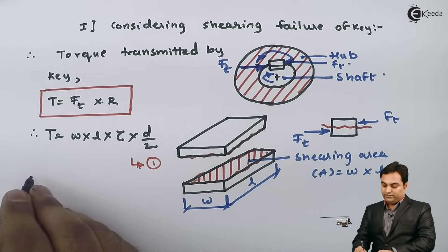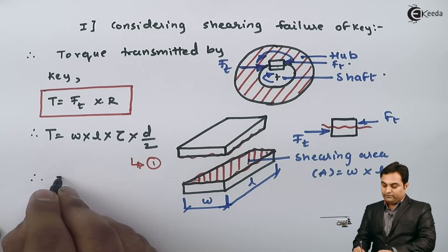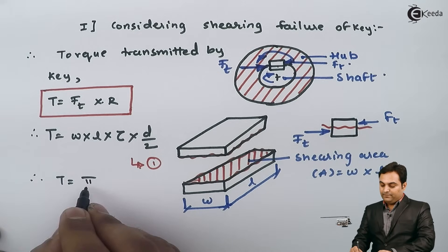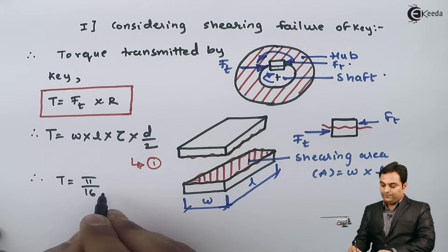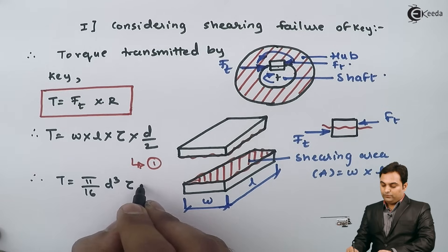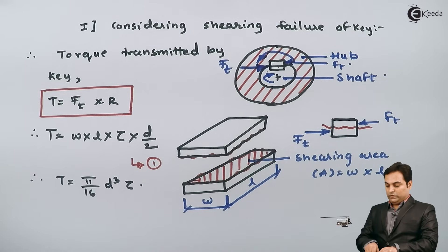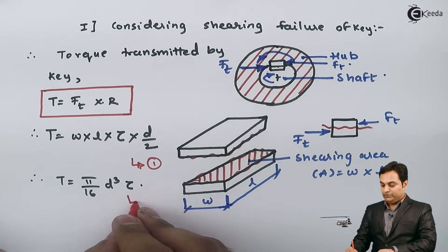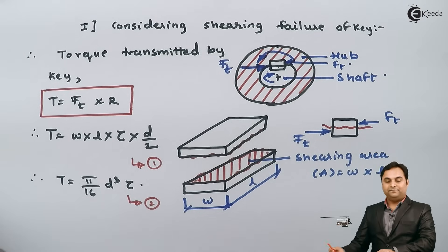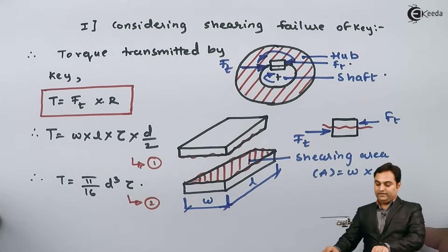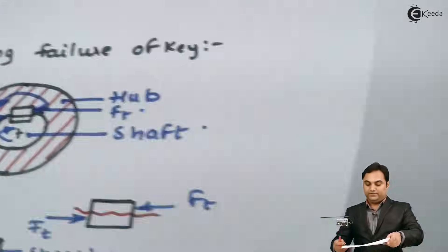We also know from shaft strength criteria that the torque transmitted by the shaft is T = (π/16) × d³ × tau. This is Equation 2. When we equate Equation 1 and Equation 2 we can solve for width W.